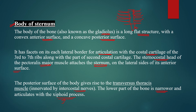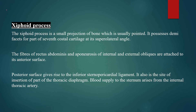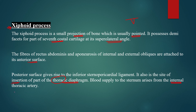The xiphoid process is a small triangular projection — the narrowest structure of the sternum — usually pointed. It possesses a demi-facet for part of the seventh costal cartilage at the superolateral angle. The fibers of rectus abdominis and the aponeurosis of internal and external obliques are attached to its anterior surface. Its posterior surface gives rise to the inferior sternopericardial ligament and is also the site of insertion of part of the thoracic diaphragm.